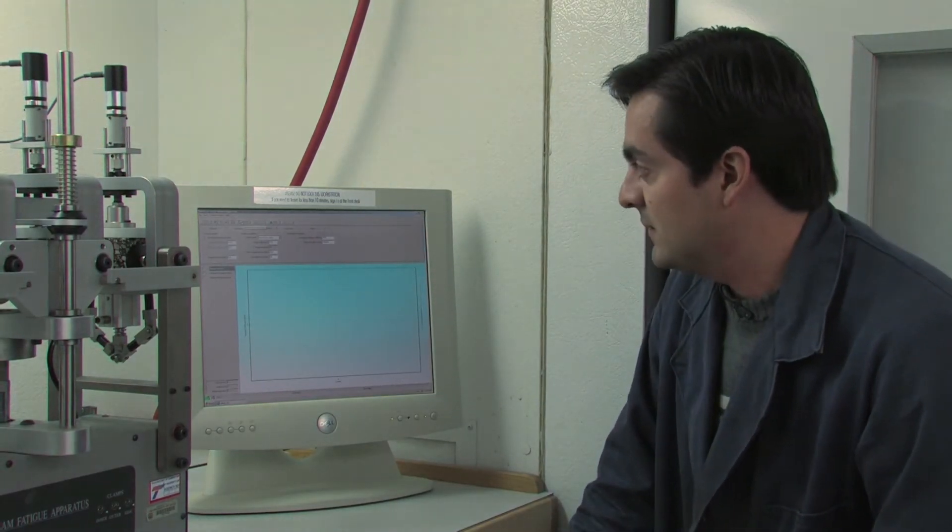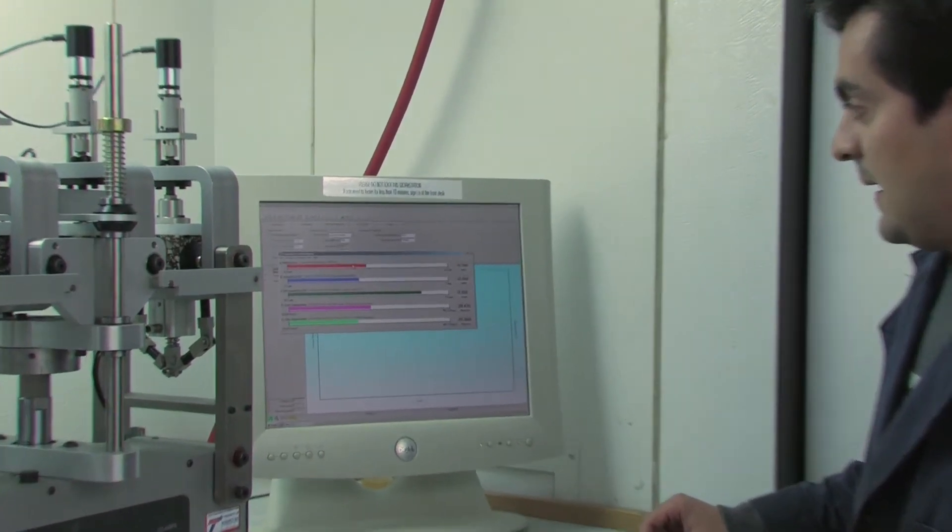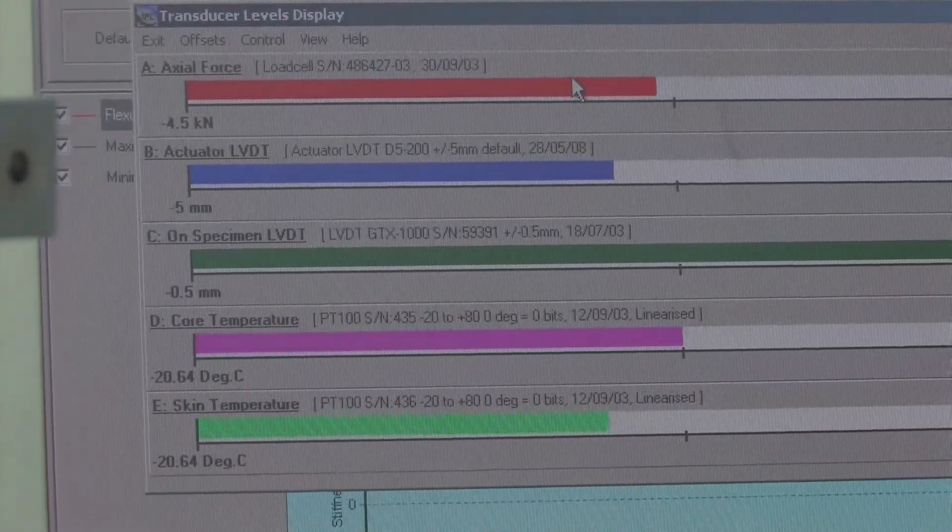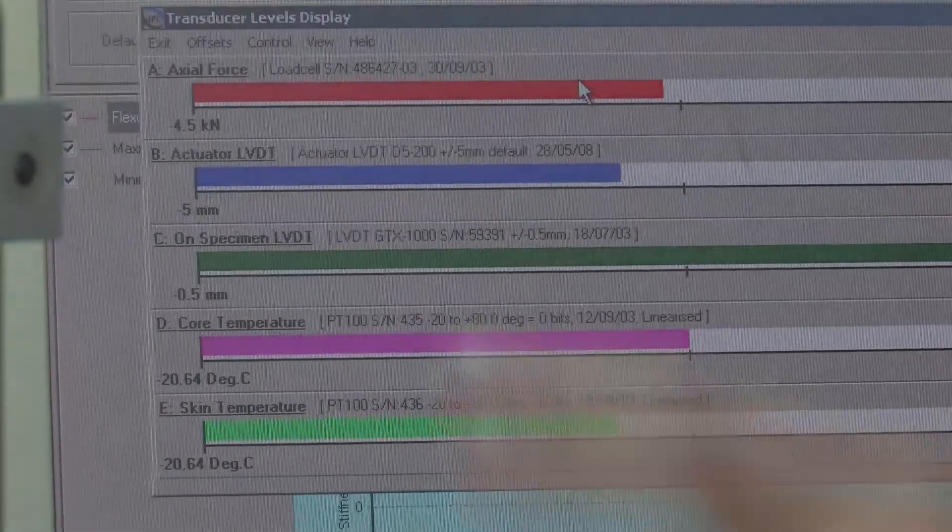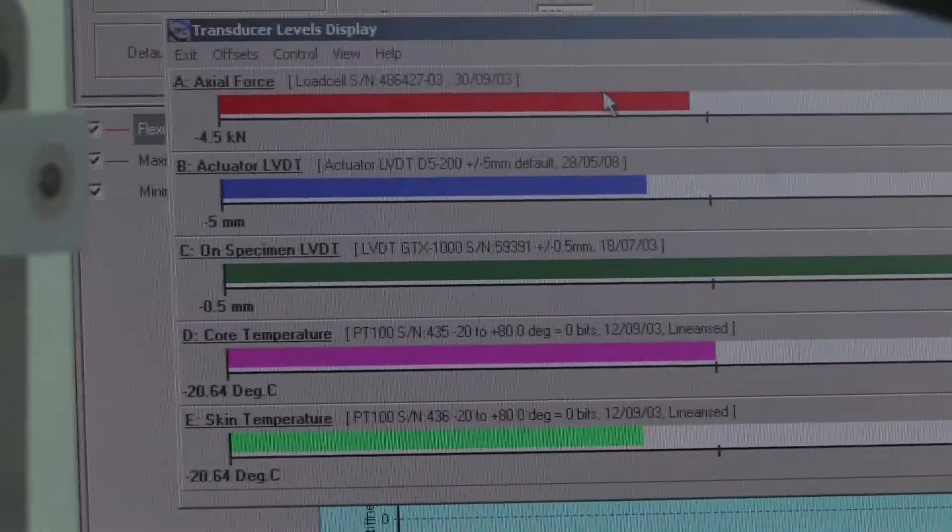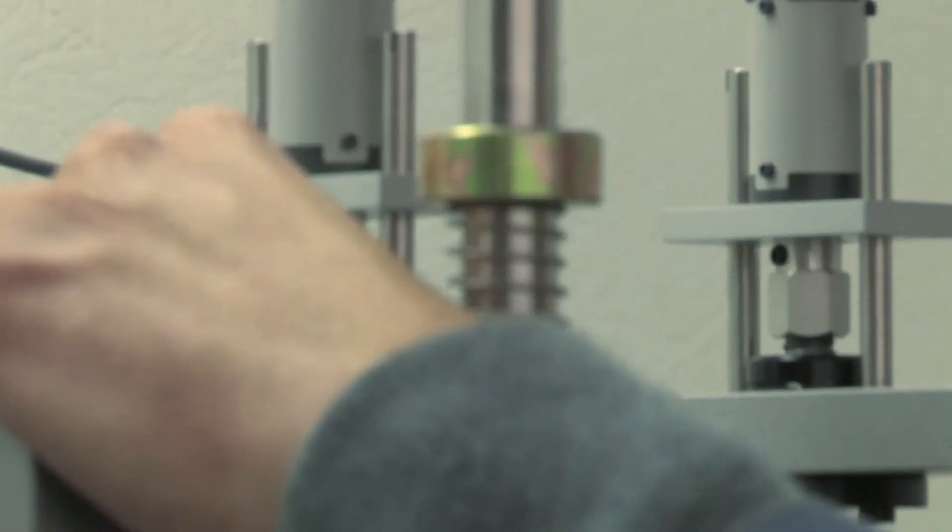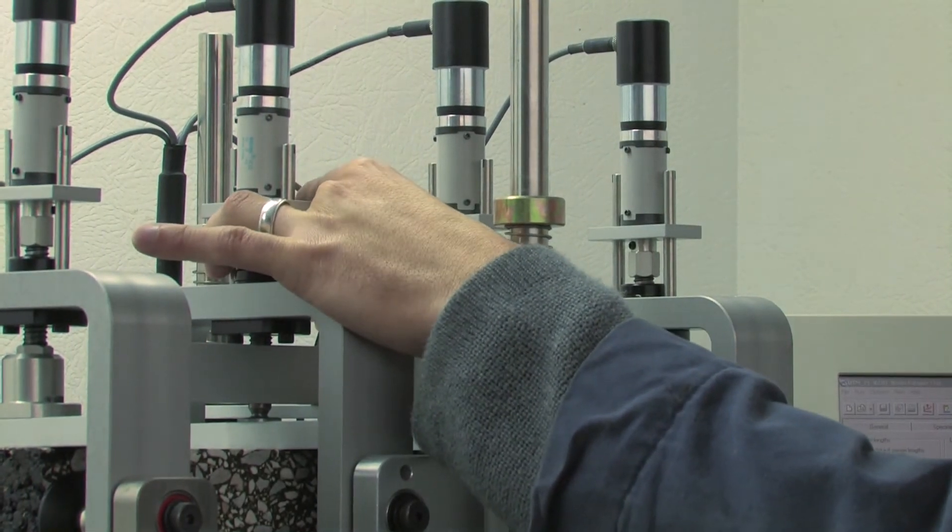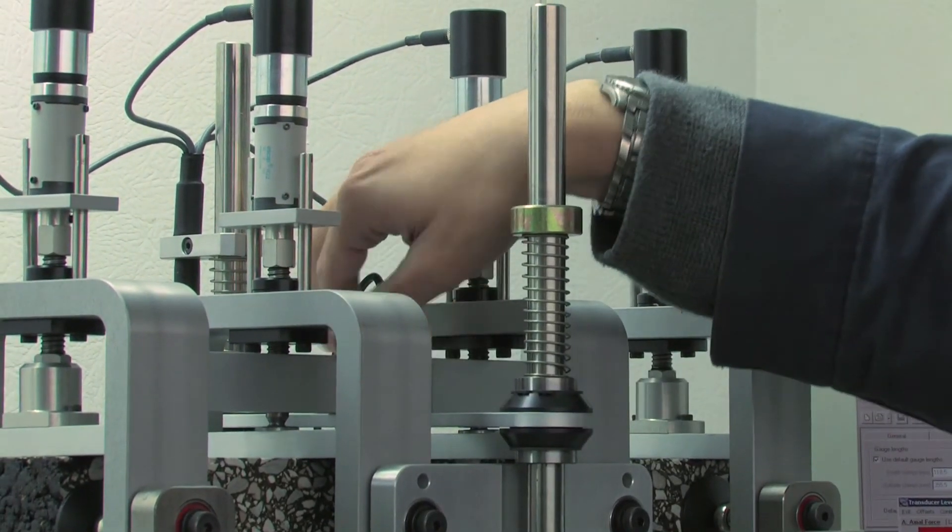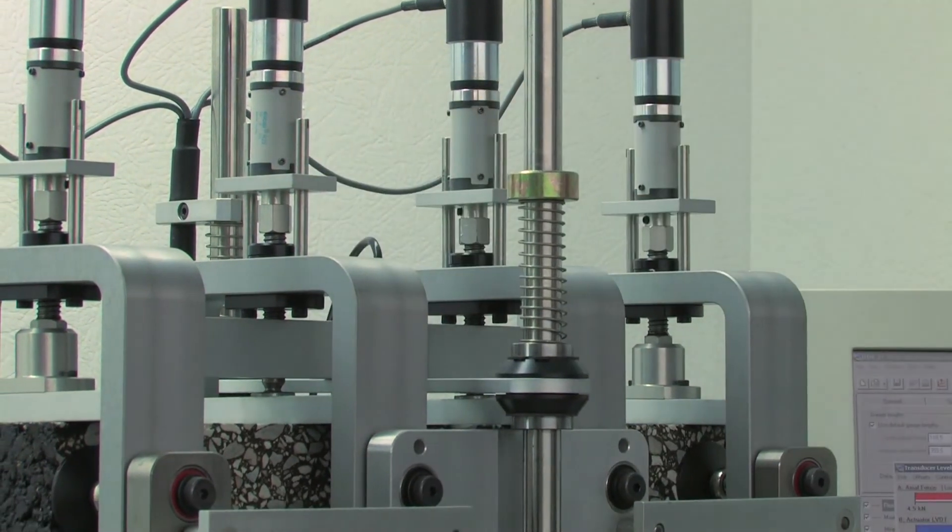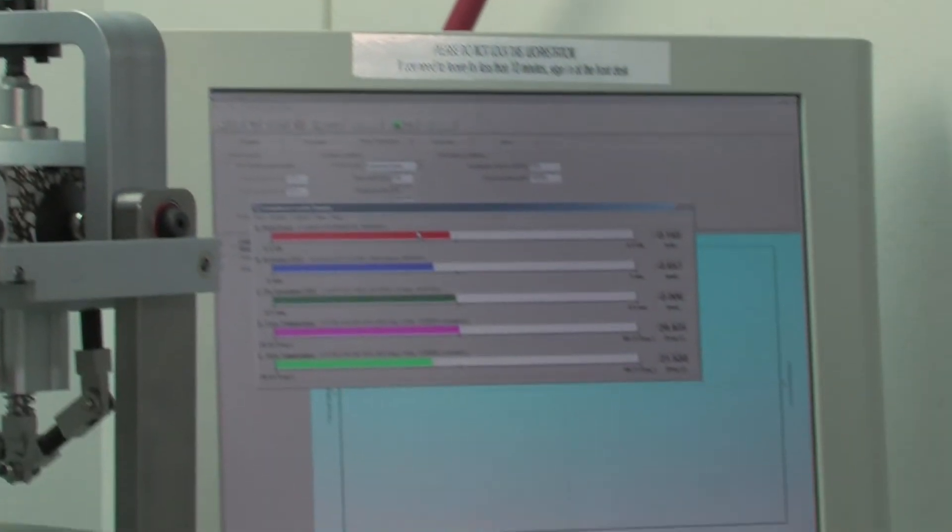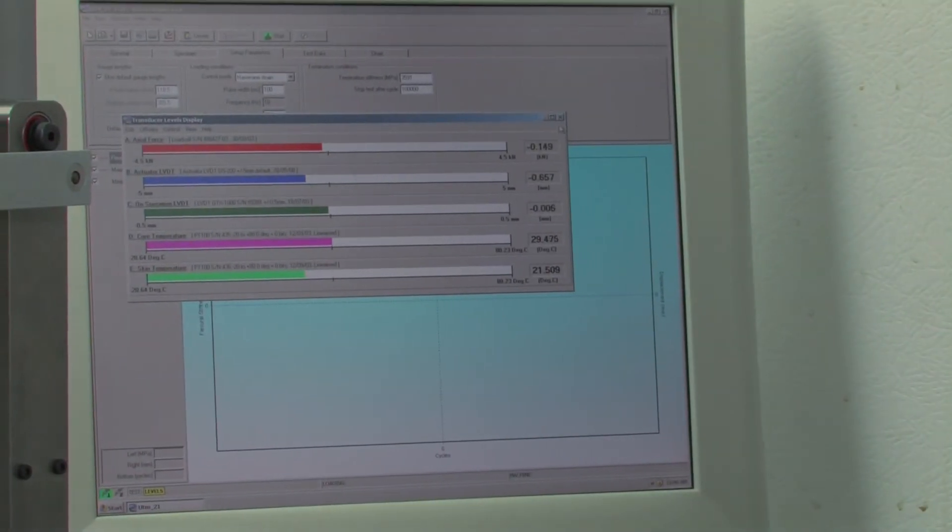Then we press on this levels button, and here what we need to do is make sure that the LVDT is kind of centered so it has room to change once we start applying the deformations on the beam. Just try to center it as much as possible, and then we are set. The other indications are temperature and the actual force, but that is centered and that's going to be controlled automatically.